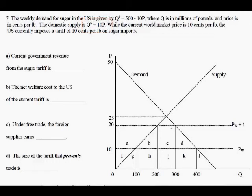While the current world market price is 10 cents per pound, the U.S. imposes a tariff of 10 cents per pound on top of that. So if the world market price is given at 10 with the tariff, in the U.S. the price would be 20. World price plus tariff.